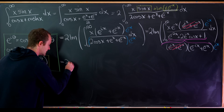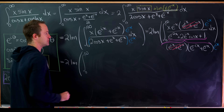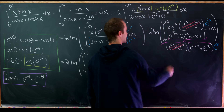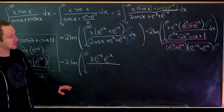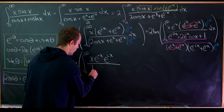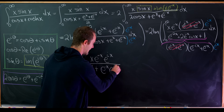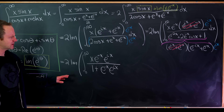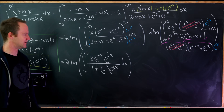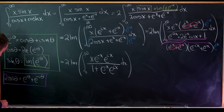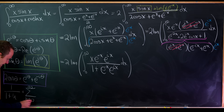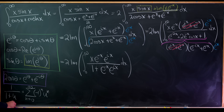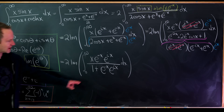After multiplying by e to the i x, we have two times the imaginary part of the integral from zero to infinity. In the numerator we have x e to the minus x e to the i x. In the denominator we have one plus e to the minus x times e to the i x — which looks like a multiple of a geometric series. Recall that one over one plus u equals the alternating series, the sum as n goes from zero to infinity of minus one to the n times u to the n. This is the alternating version of the geometric series formula, appropriate here because we have a plus sign.